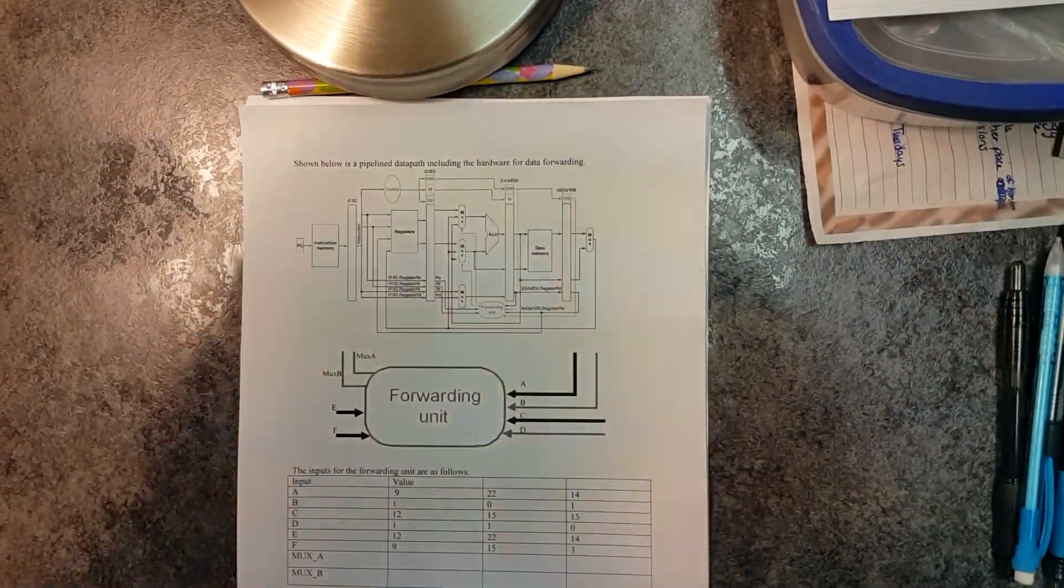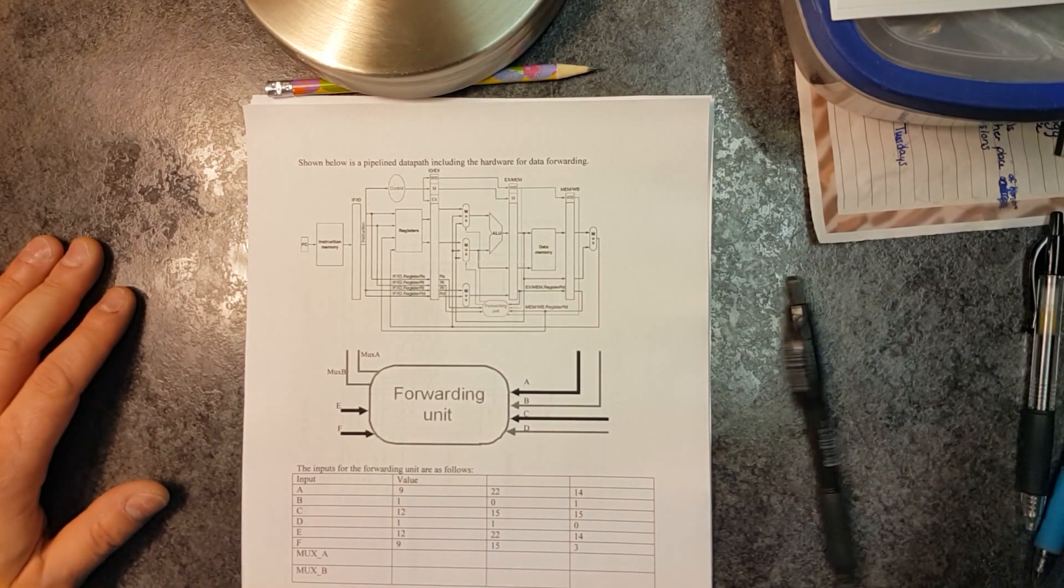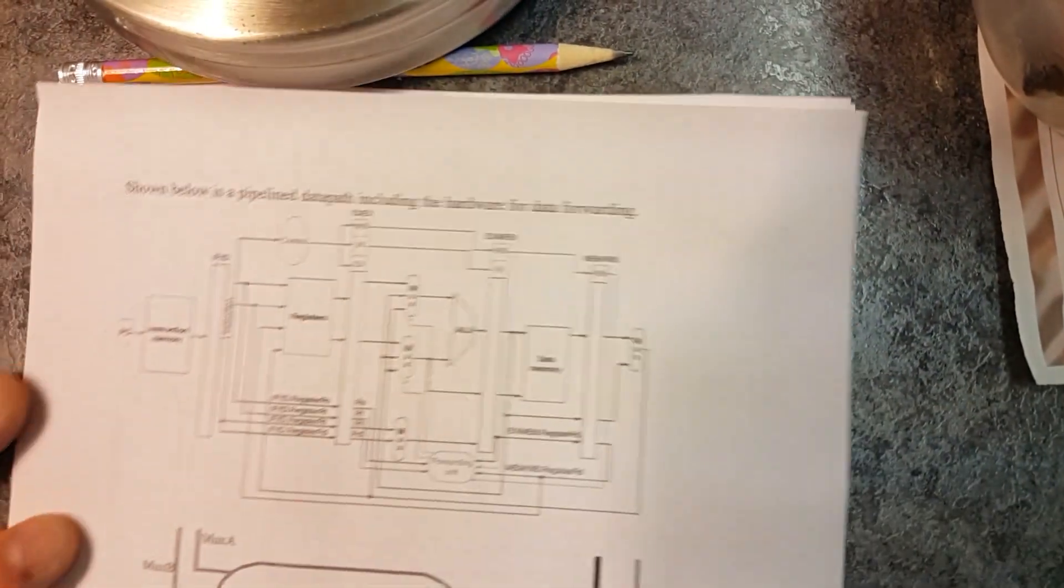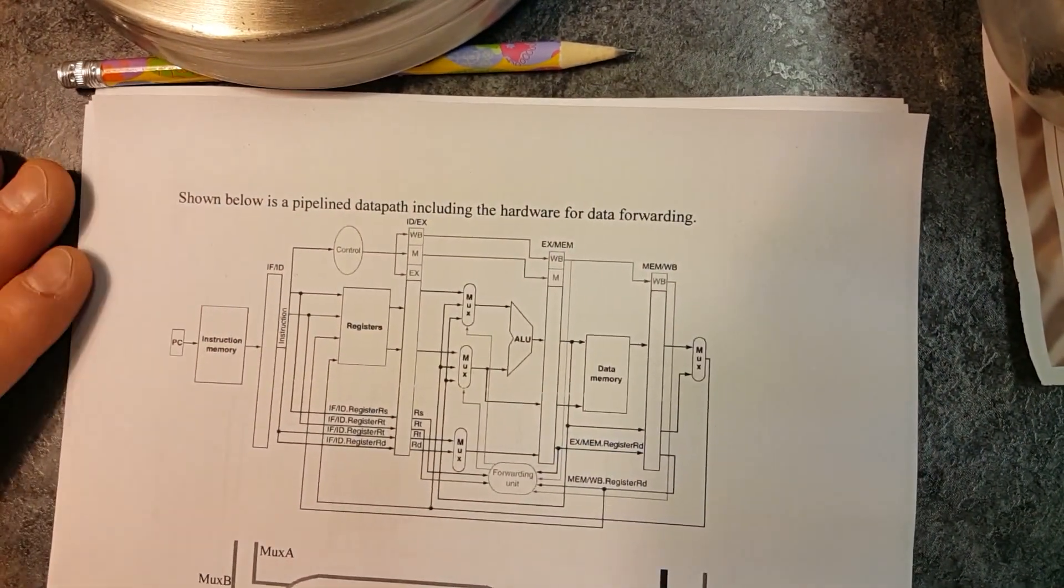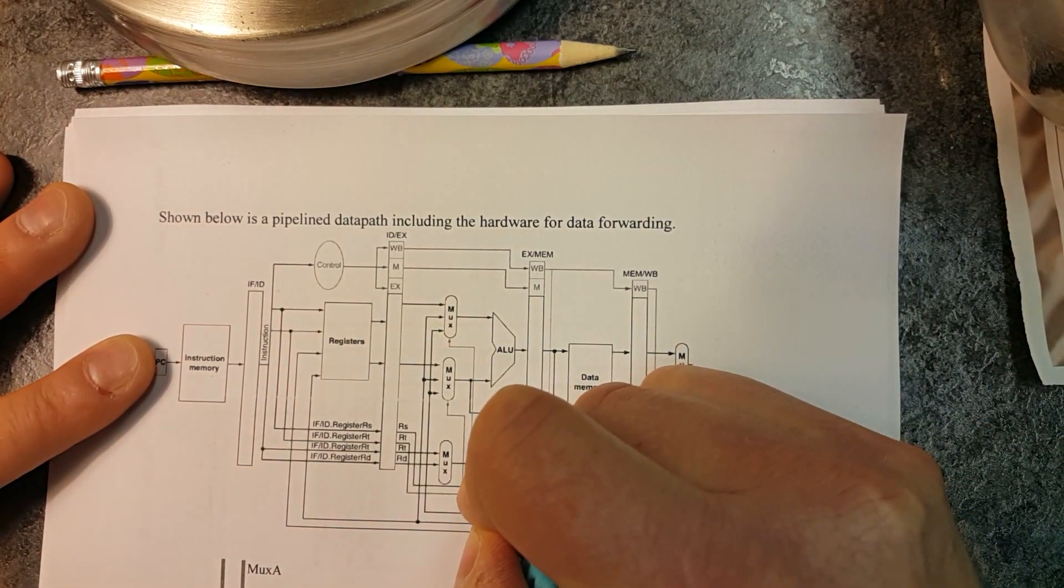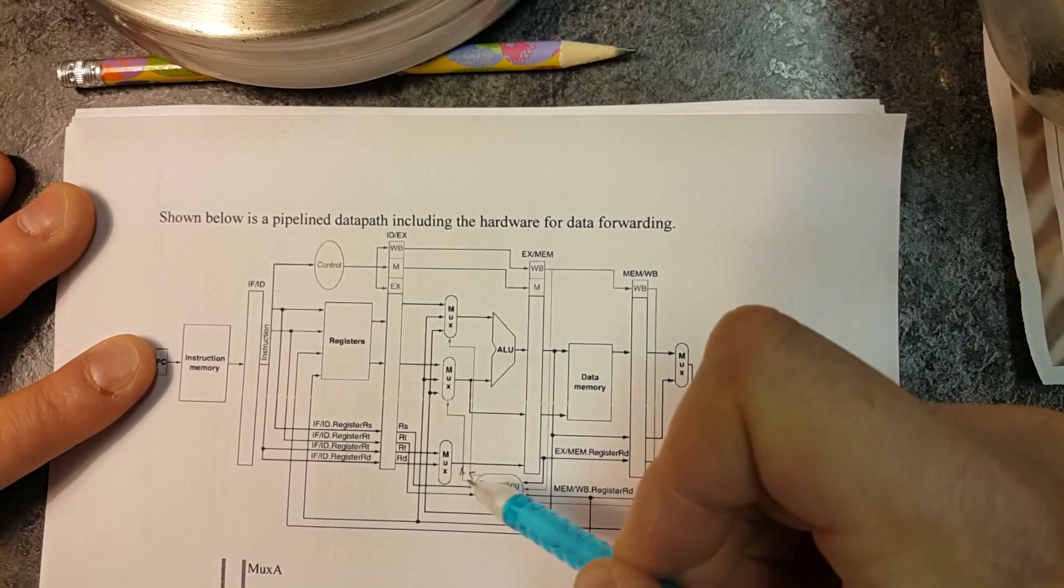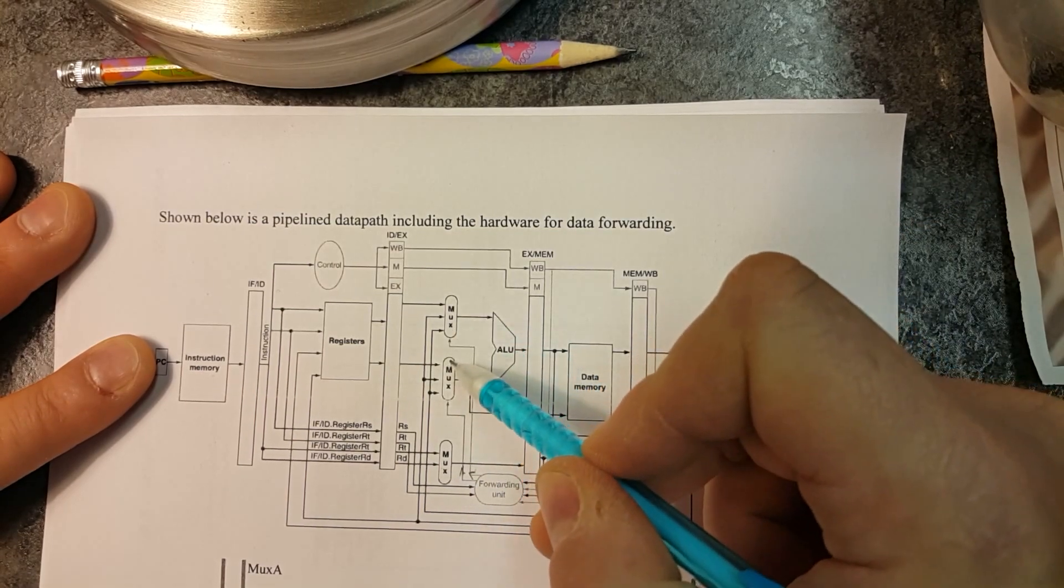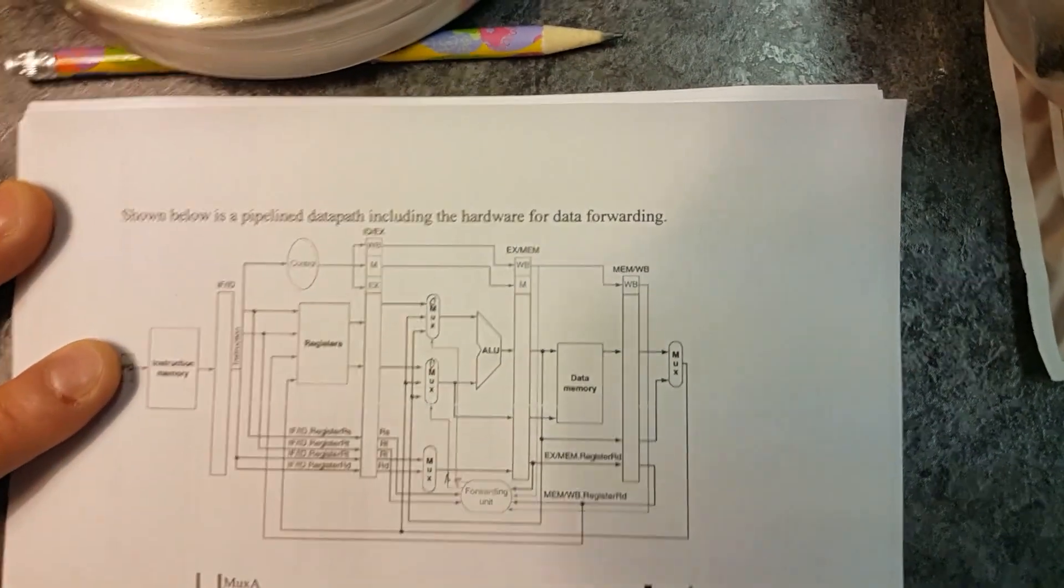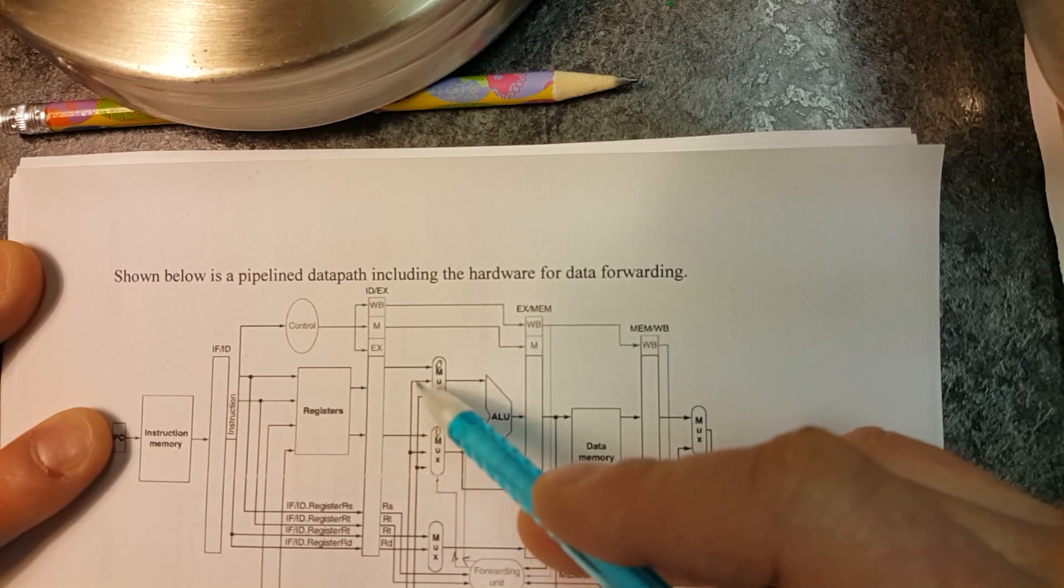Now here we go. Now we're talking about the forwarding unit. We have the output bits, and they are two bits apiece. What they do is they tell the MUXs what to forward. Now zero is always going to be the default. What we have to do is figure out which one, either of the data memory phase or the write back phase, is the second and third input.